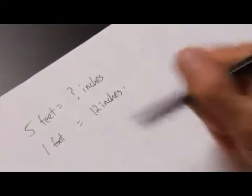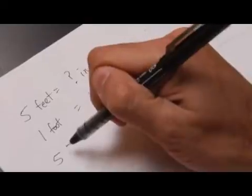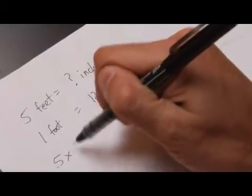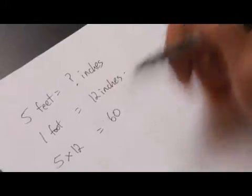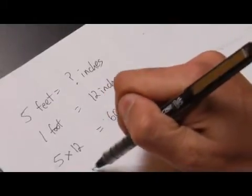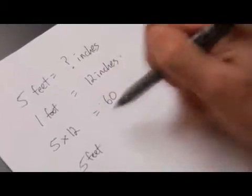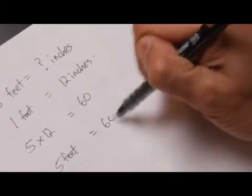So five times 12 would equal 60. So five feet equal 60 inches.